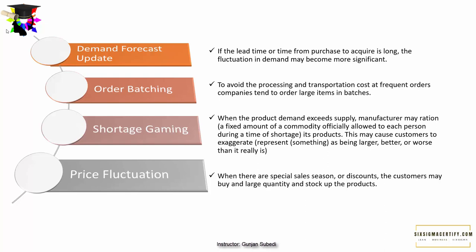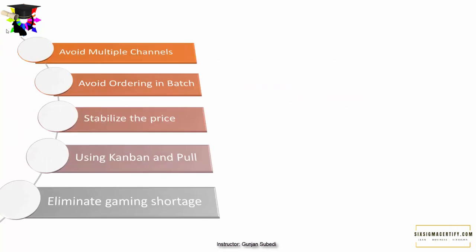How can companies or supply chain elements counter the bullwhip effect? We studied four causes — now let's study four solutions. The first solution is to avoid multiple channels for demand forecast data in the supply chain. If possible, companies should derive demand data directly from consumer behavior. There should also be good communication between supply chain components to improve operational efficiency.